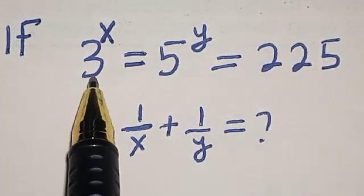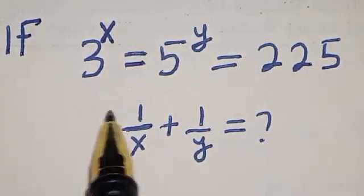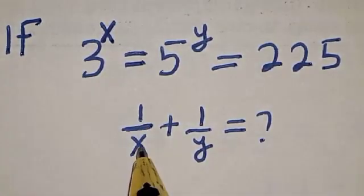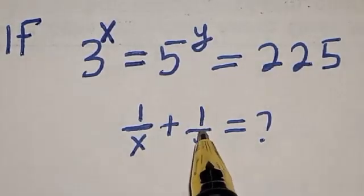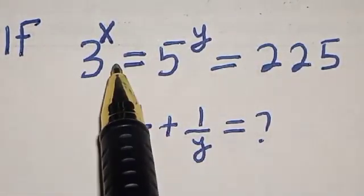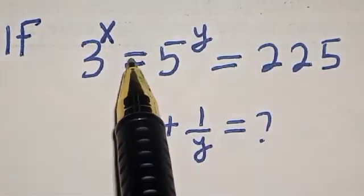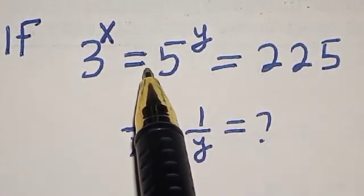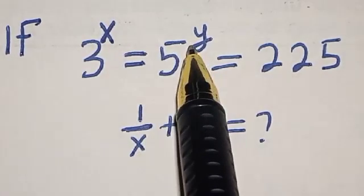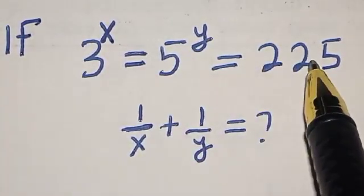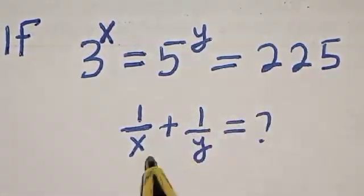Hello, welcome to Math Gist. In this class we want to find the value of 1 over x plus 1 over y, from the given equation: 3 raised to power x is equal to 5 raised to power y is equal to 225.